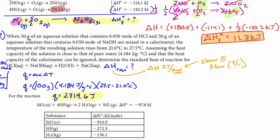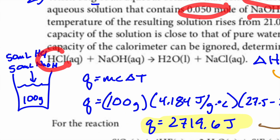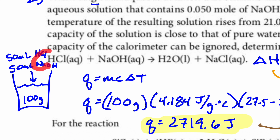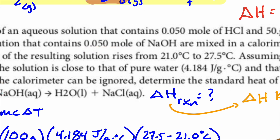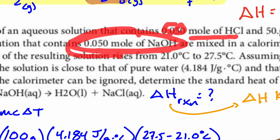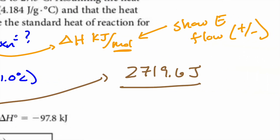To get enthalpy per mole, I take my joules and divide by moles. The problem tells me I have 0.05 mol HCl reacting with 0.05 mol NaOH — same number of moles, one-to-one ratio. It's not addition; it's the limiting reactant. This is the smallest amount of moles reacting, so that's what I divide by.